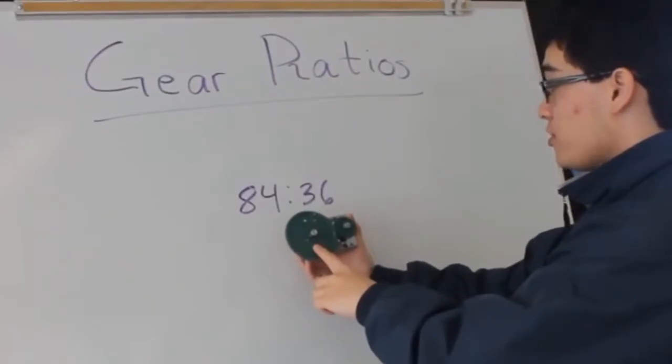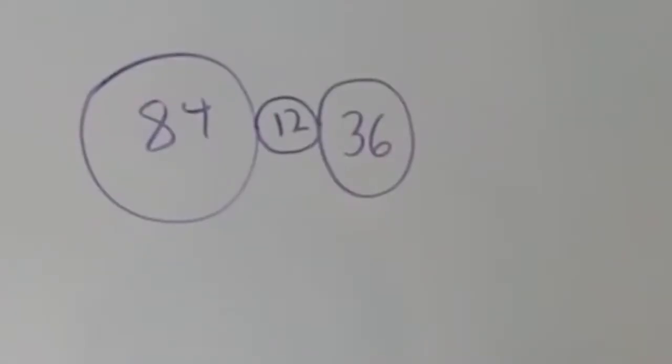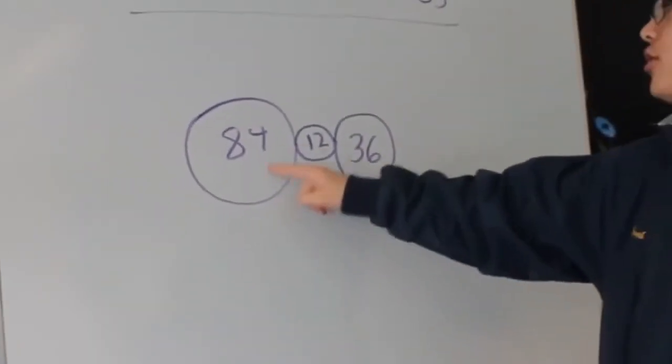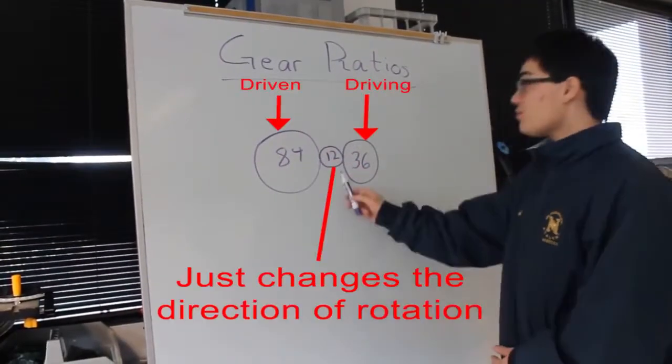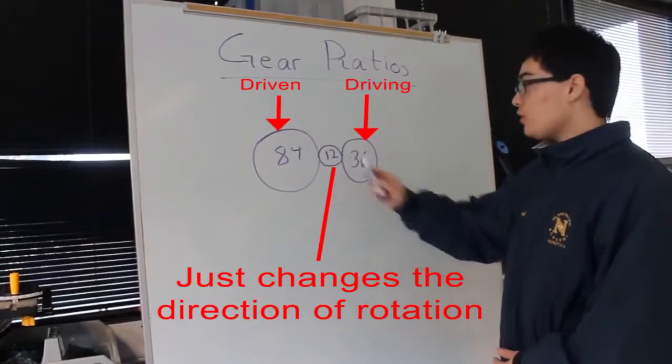In this gear ratio, we have an 84 tooth gear driving a 12 tooth gear, driving a 36 tooth gear. This gear in the middle is called an idle gear because it really doesn't do anything.